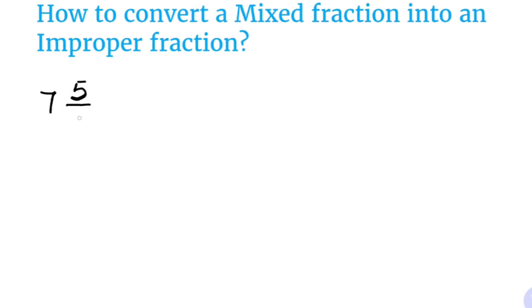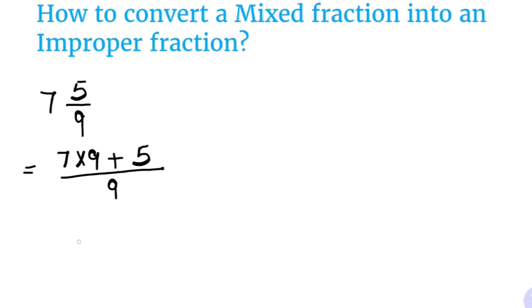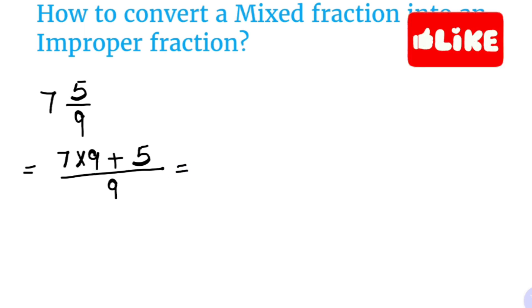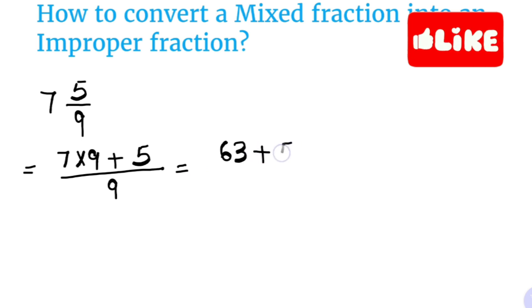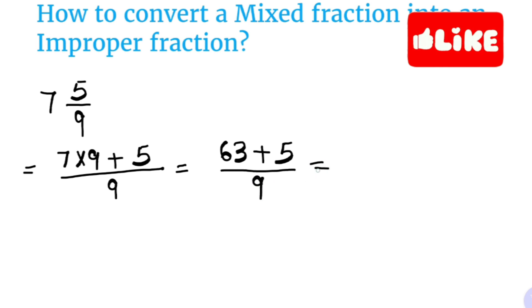Now let us take another example — converting a mixed fraction into an improper fraction. Here I have taken 7 5/9, which is another mixed fraction. The denominator will be the same, that is 9. Only the numerator will change. For that, we will multiply the whole number 7 with the denominator and add the numerator, that is 5. So 7 × 9 is 63.